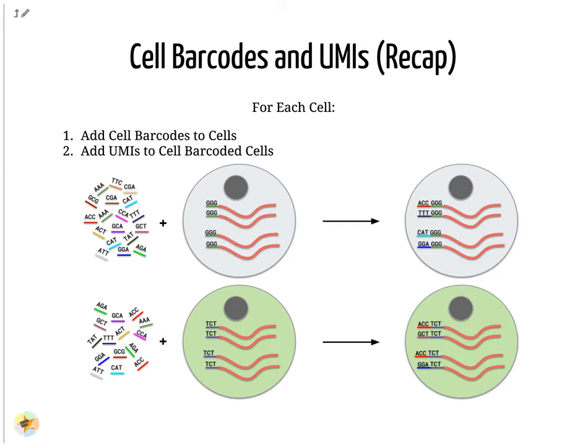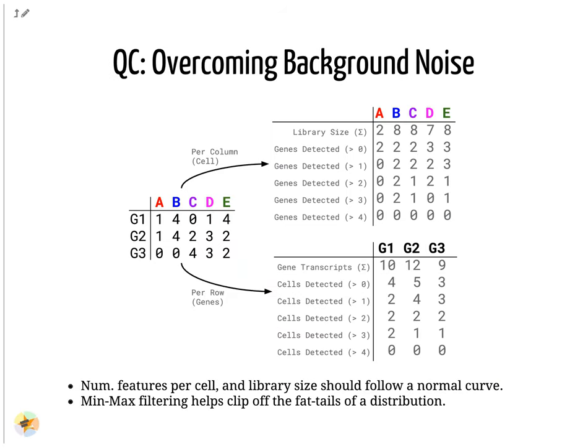After amplification we need to perform some quality control. One way to do this is to set thresholds on the limits of detectability for genes and for cells. Consider an analysis governed only by three genes, G1, G2 and G3, and five cells, A, B, C, D and E. The first row of the top table defines the library size, which is the total number of messenger RNAs across all genes in each cell.